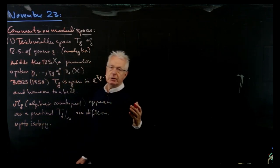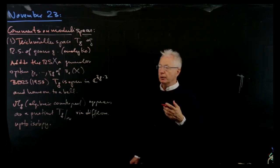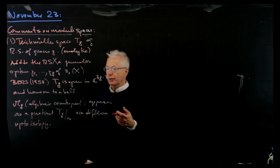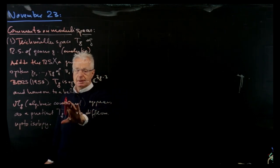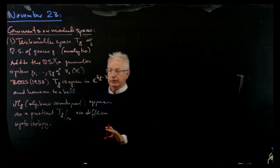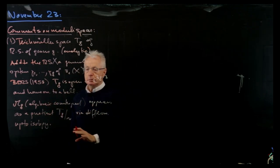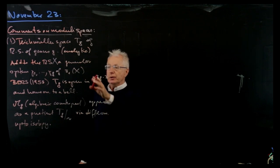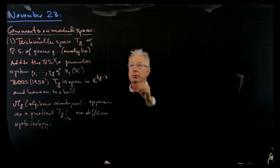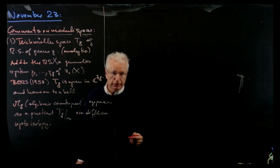In order to construct Mg, which is the algebraic counterpart, Mg appears as a quotient Tg modulo diffeomorphisms up to isotopy. So this was the state of art before Grothendieck and Mumford and DeLigne and Knudsen came into the picture. This is one way to approach Mg, which will be defined later on, and then to prove that it is algebraic, to see it covered by the Teichmüller space.